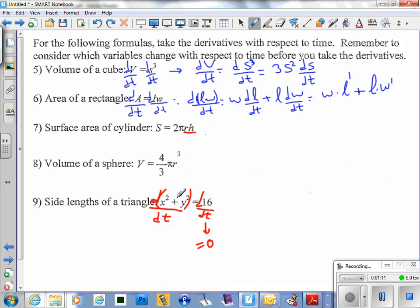This looks like an implicit differentiation. Let's do what we have learned. We are going to distribute these, so we get d(x²)/dt + d(y²)/dt.